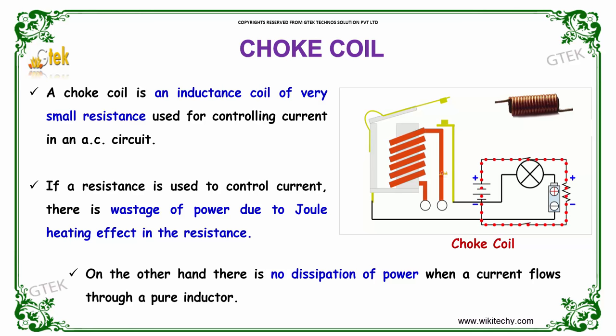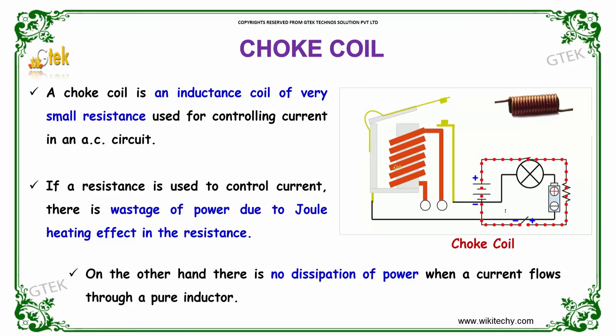If a resistance is used to control current, there is a wastage of power due to Joule's heating effect in the resistance. On the other hand, there is no dissipation of power when a current flows through a pure inductor.